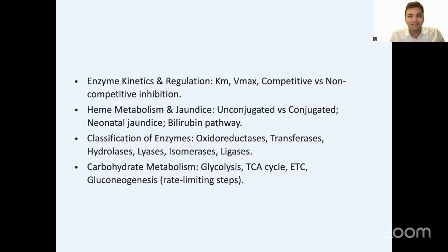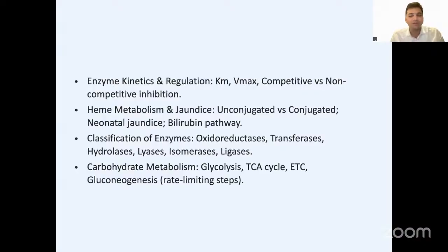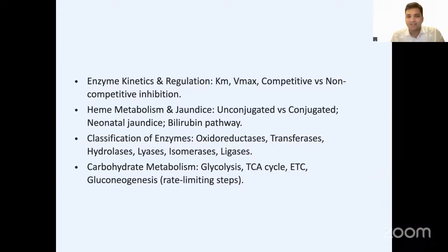The first thing the INI guys love to ask about is enzyme kinetics — competitive inhibition, non-competitive inhibition, and uncompetitive inhibition, which is also discussed in pharmacology the same way. Then heme metabolism: unconjugated hyperbilirubinemia, conjugated ones, Crigler-Najjar, Dublin-Johnson syndrome, and the bilirubin metabolism pathway. For enzymes, there's the IUB classification, the mechanism of enzymes, and which enzyme belongs to which family.